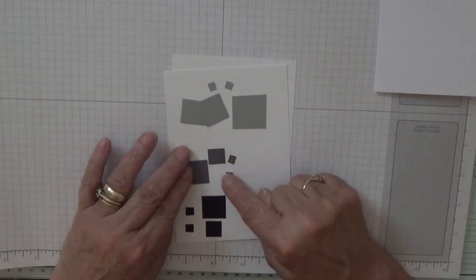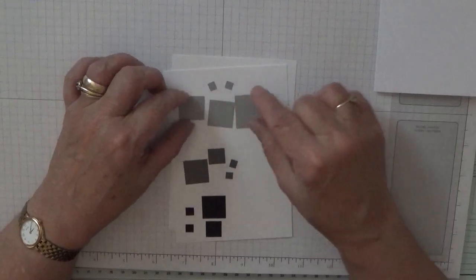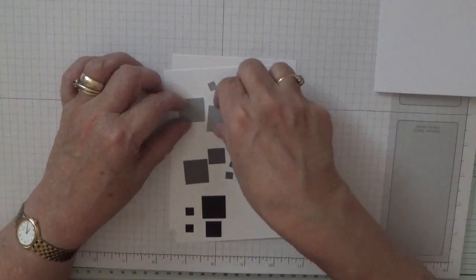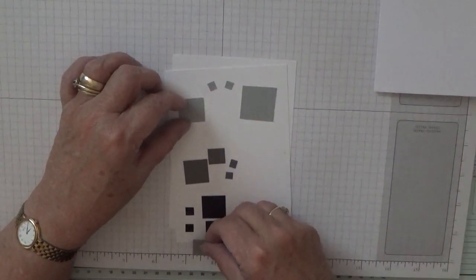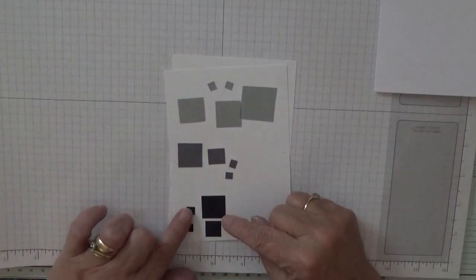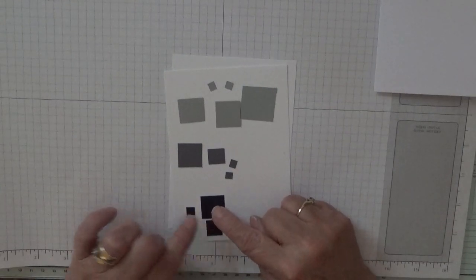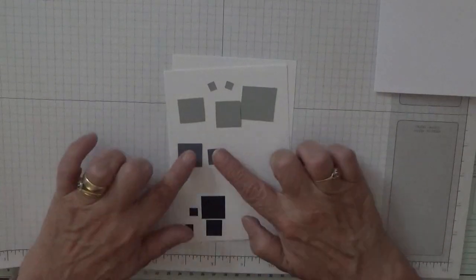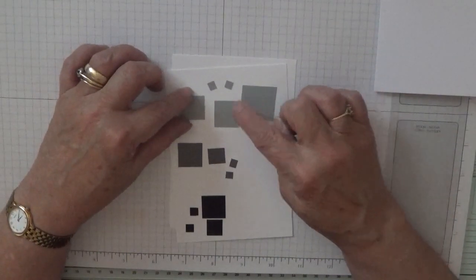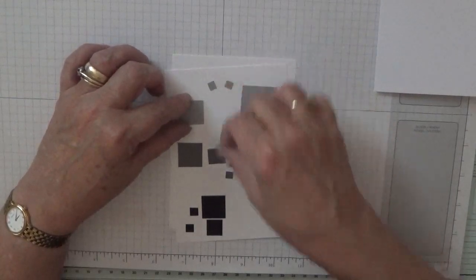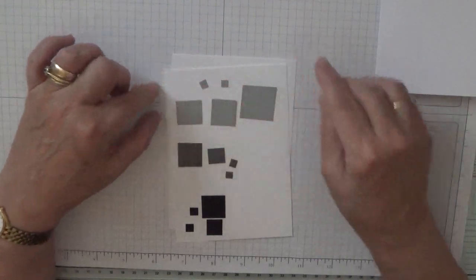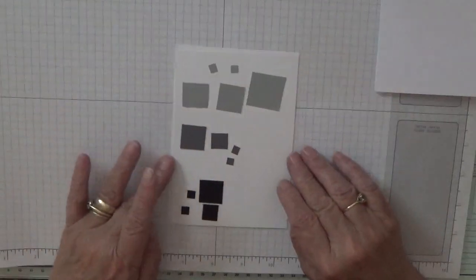In the basic grey I've got one one inch. In the smoky slate I've got a one inch. These are three quarters of an inch. Start again. So we've got a quarter inch, a half inch, and a three quarter inch in the basic black. And in the basic grey, in the smoky grey I've got a one inch, two three quarter inch, and two quarter inch squares.